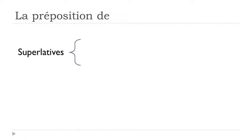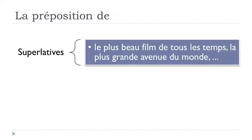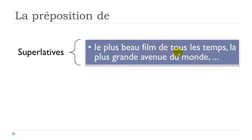We also use this preposition de with superlative constructions. For example: le plus beau film de tous les temps — the most beautiful movie of all time. And: la plus grande avenue du monde — the biggest avenue in the world. Here de combines with le monde to give du monde. For all superlative constructions, remember to use de.